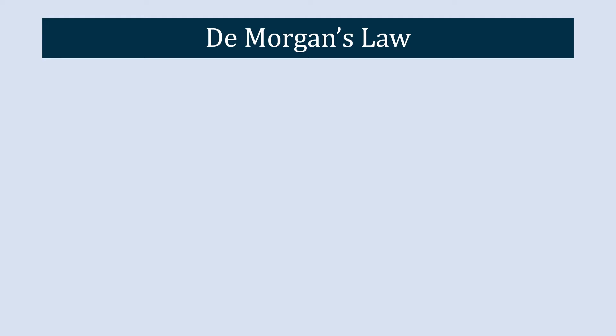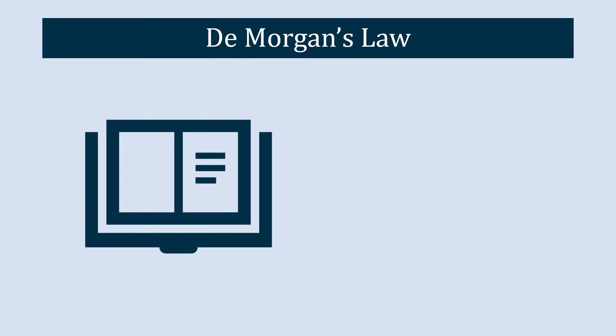In this video we are going to learn De Morgan's theorem. Before we start, the first and most important thing is to know why De Morgan's theorem is very important and useful in digital electronics. The most important thing about De Morgan's theorem is the simplification of Boolean expressions, which is very crucial in digital electronics.